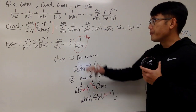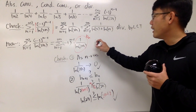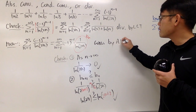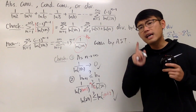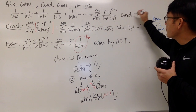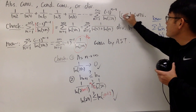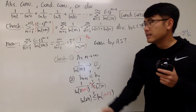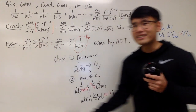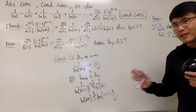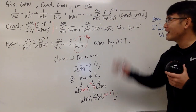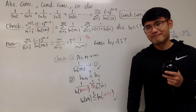Therefore, without the absolute value, this series actually converges by the alternating series test. With that said, we conclude this is a conditionally convergent series — the absolute value version diverges, but the original series does converge. That is the definition and vocabulary we need to know: conditional convergence.